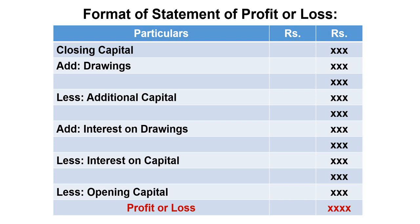Usually, adjustments in the balance sheet are made with capital — adding and expanding. Interest on drawings in the balance sheet is treated opposite to the Statement of Profit. Closing capital minus opening capital gives profit or loss. The Statement of Affairs method involves these three accounting steps.